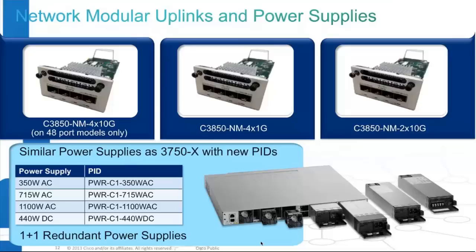Now let's look at power supplies. Good news: if you've been using a lot of 3750X in your network, the power supplies are compatible with 3850s. If you have spare power supplies, those can be reused with 3850 switches. However, if you're ordering new 3850 switches, the PID of the power supplies may differ from the 3750X — PID means product identification code, and the difference is for tracking purposes only. We have four flavors ranging from 350W AC to 1100W AC, plus a DC power supply. For full PoE support you need two power supplies, and both are 1+1 redundant.